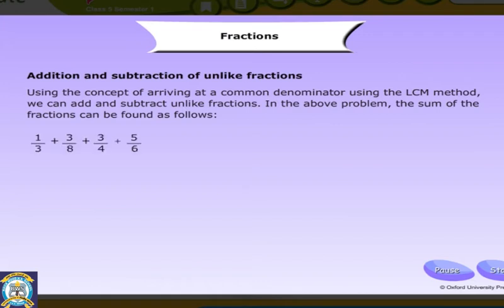We found the common denominator using the LCM method as 24. So, we can write 8 by 24 plus 18 by 24 plus 20 by 24 plus 9 by 24. Adding the numerators, we have 55 by 24, which is also equal to 2, 7 by 24.